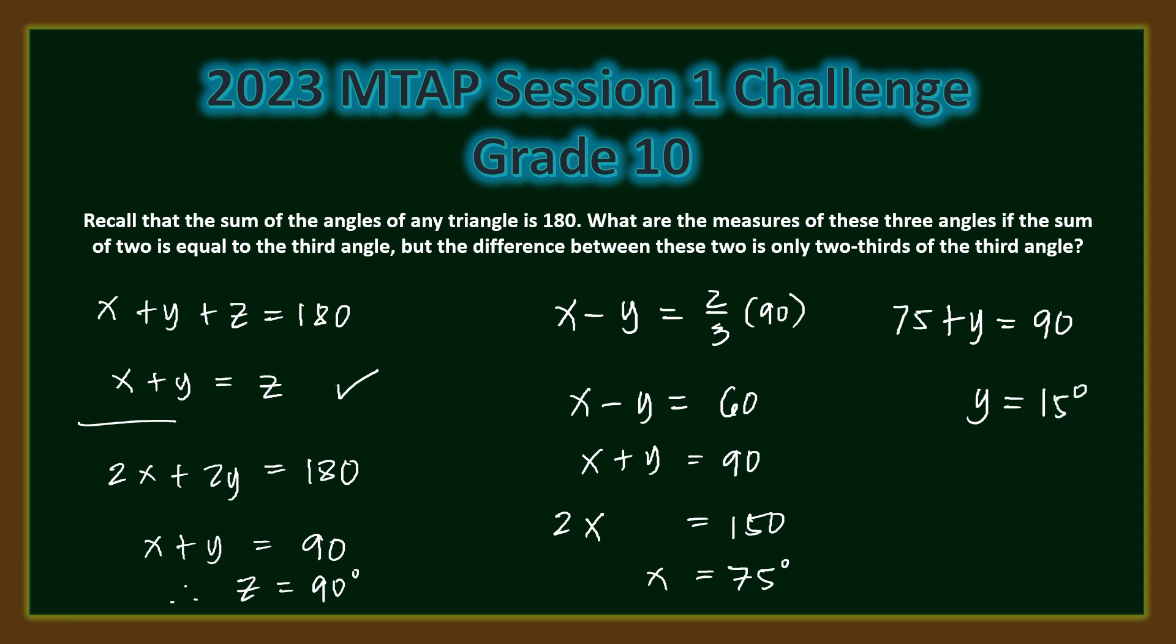So the measures of the angles of this triangle are 15 degrees, 75 degrees, and 90 degrees.